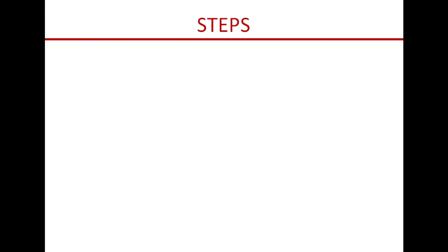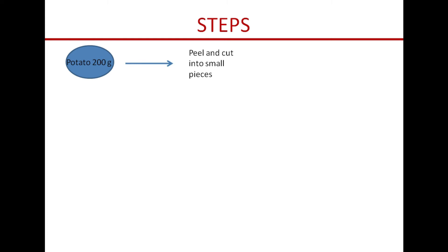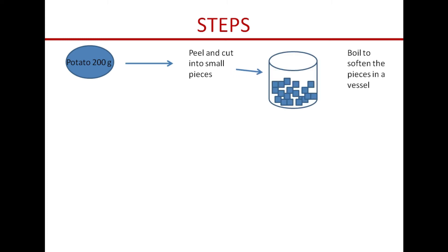Now, what are the steps in making PDA medium? This is one of the first media that a plant pathologist prepares during their learning years. We take 200 gram of potato, peel and cut them into small pieces, then take distilled water and boil the potato pieces in a vessel until they become soft.